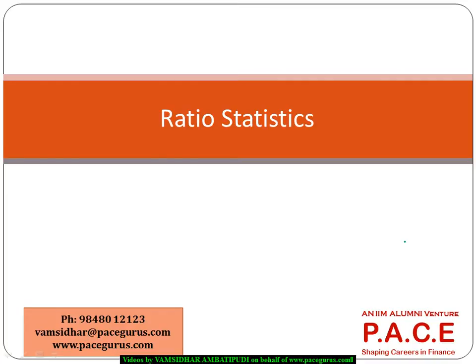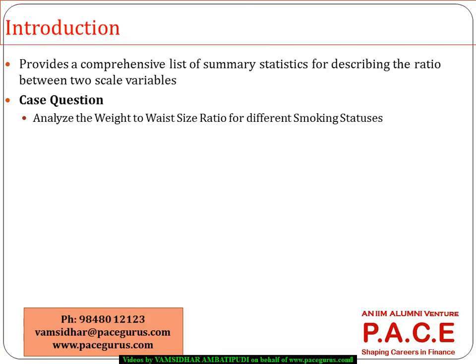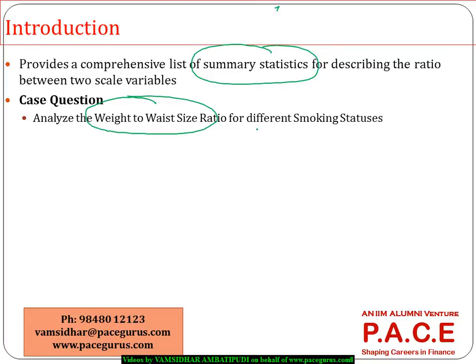Or I can use the ratio statistics procedure of SPSS. This procedure provides a comprehensive list of summary statistics for the ratio between two variables. For example, a question like: analyze the weight-to-weight-size ratio for different sets of people.